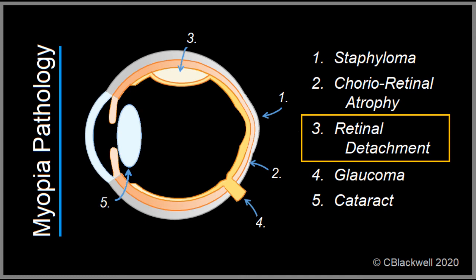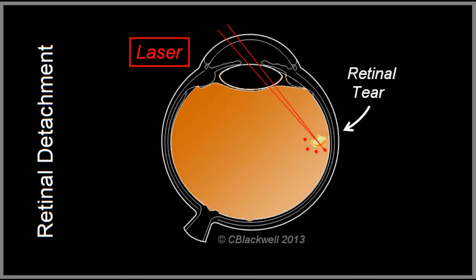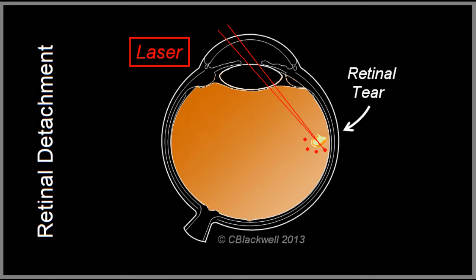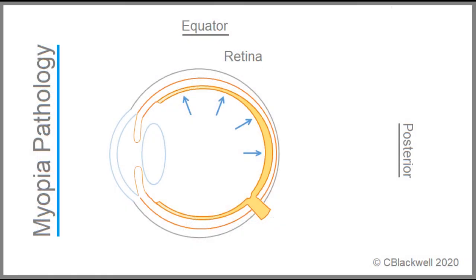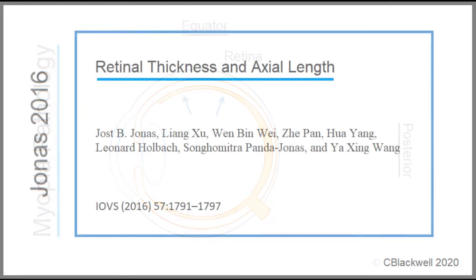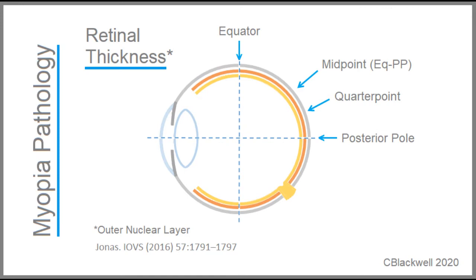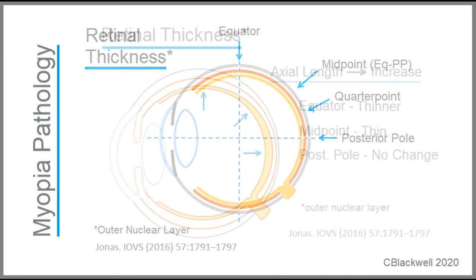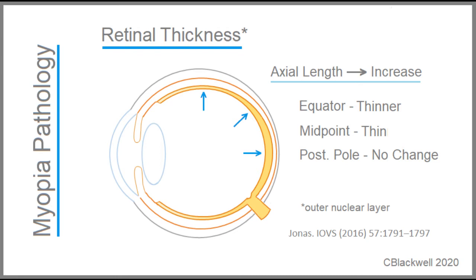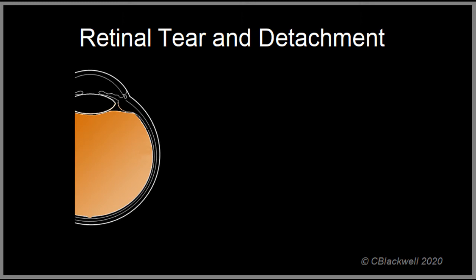Number three on our complication list is retinal detachment. Of the higher-risk items, it is the one most amenable to intervention and prevention. The retina is a layer of nerve tissue that lines the inside of the eye; in myopia, there is thinning of the retina, mainly around the equator. Using both OCT scanning and microscopic sections, measurements showed that with increasing axial length, the retina thins significantly at the equator while retaining about normal thickness at the posterior pole. This contributes to risk of retinal tear and detachment.